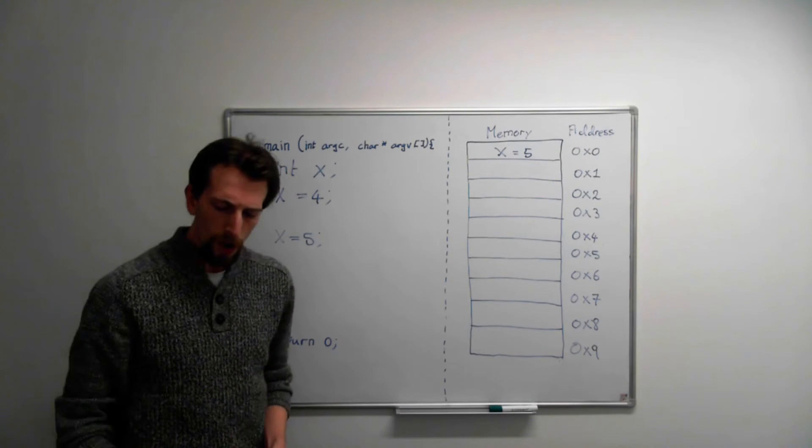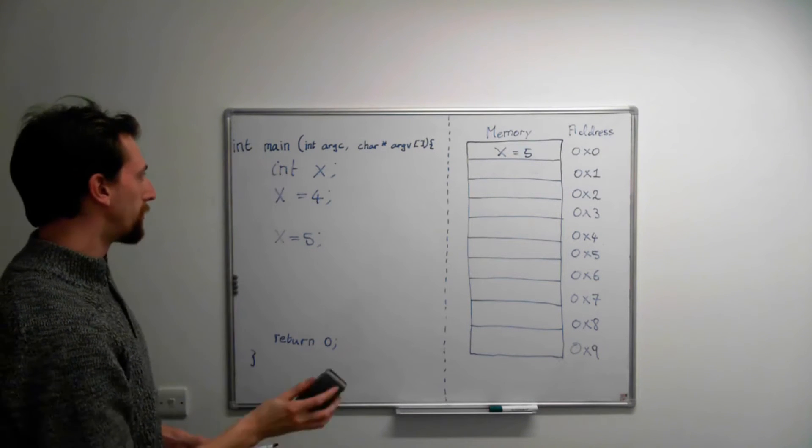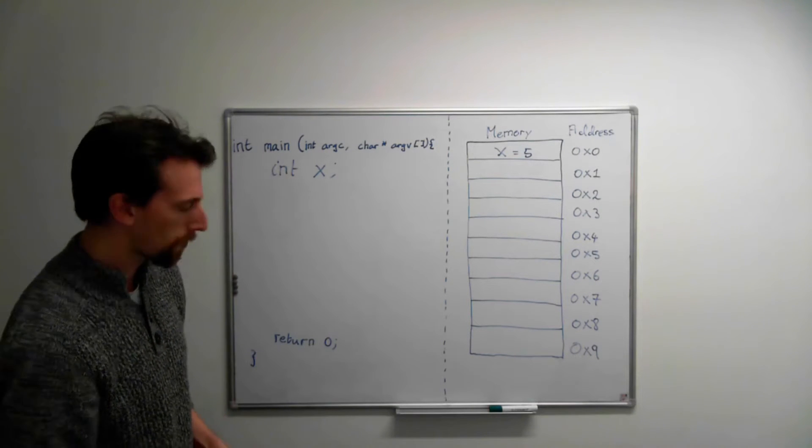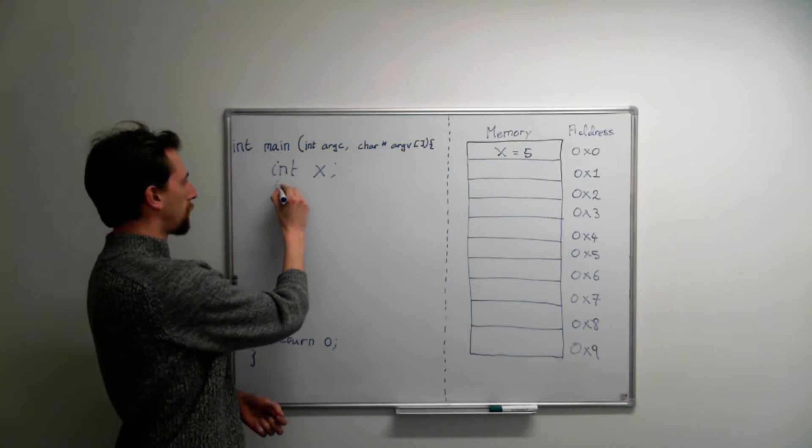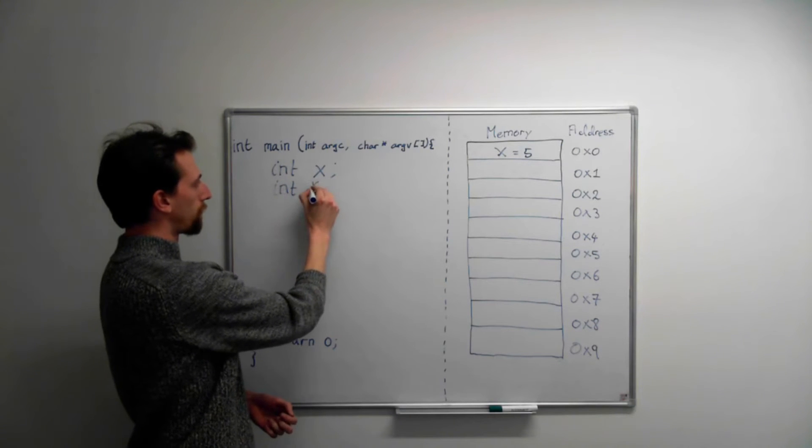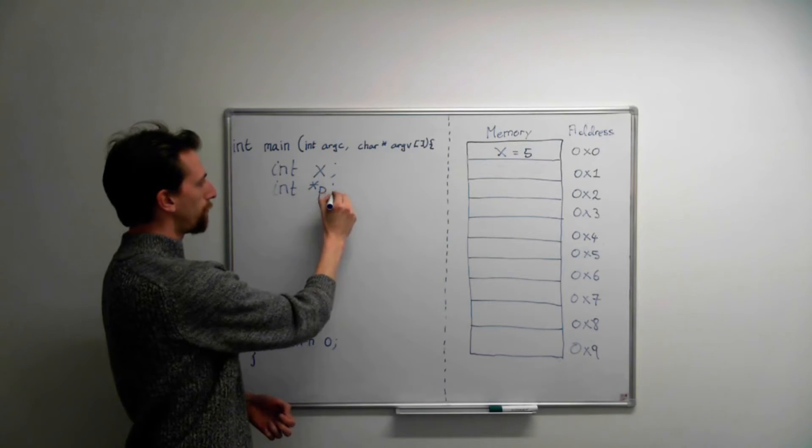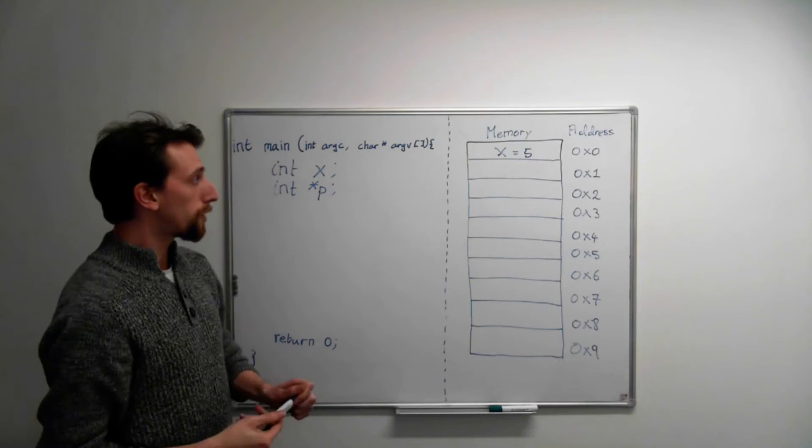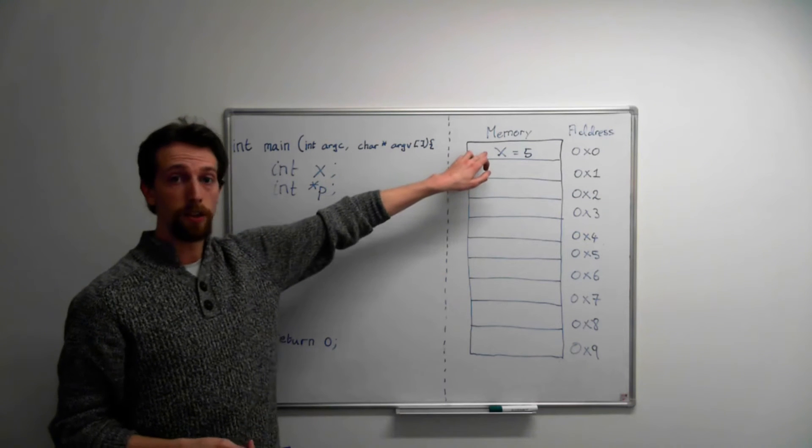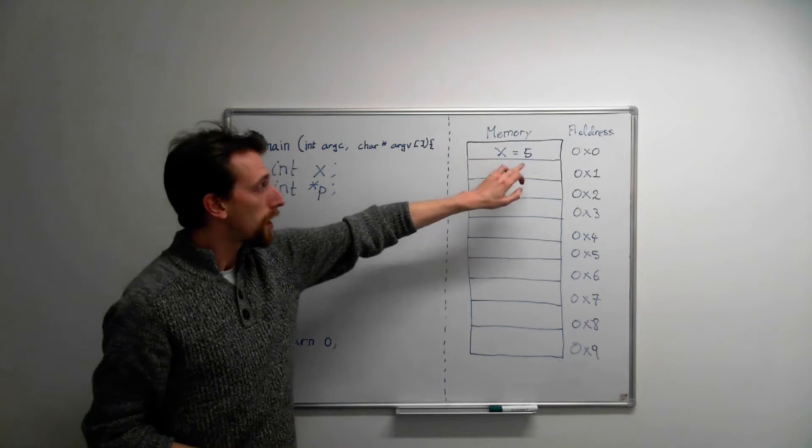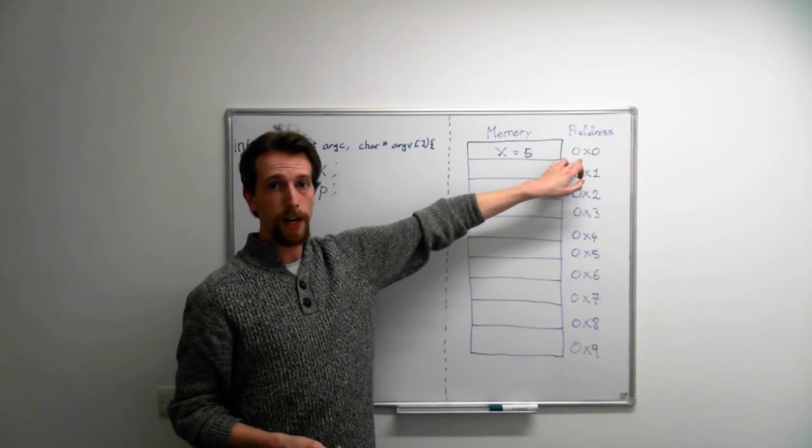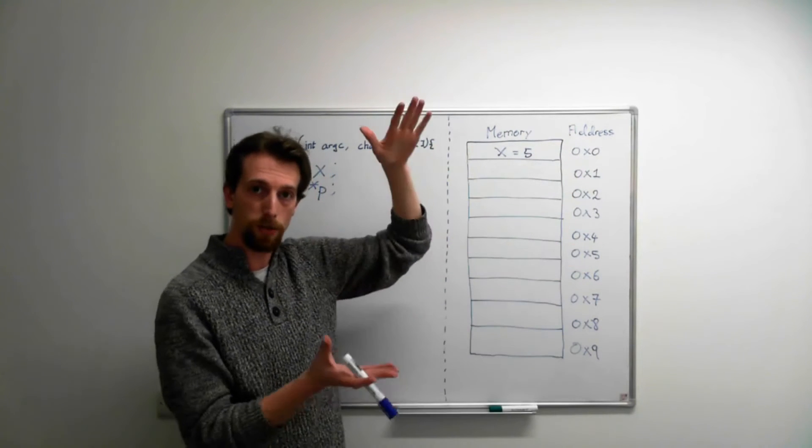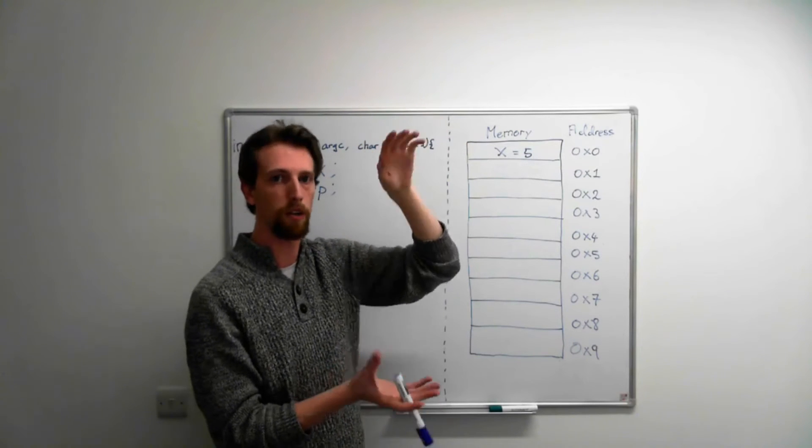Where pointers get slightly weird is pointers don't store that value. Now, a computer is a completely logical machine. So in order to find where it put that value of x, it gives it an address. These are logical addresses. You can see here they increment in this case. It tends to be some block, some contiguous block of memory.